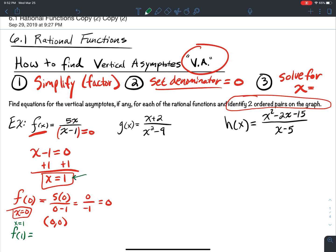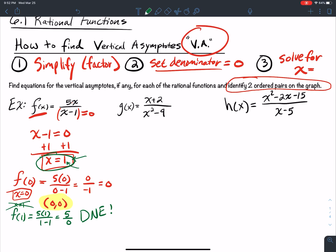What if we plugged in x equal to 1? Well let's see what happens. When I plug it in, I get 5 times 1 over 1 minus 1, so it's 5 over 0. This does not exist. Why does it not exist? There's a vertical asymptote there. So don't plug in a point that's that same number that we use for our vertical asymptote. So this is a point, we need one more point. One more point will get us the answer for identify two ordered pairs.